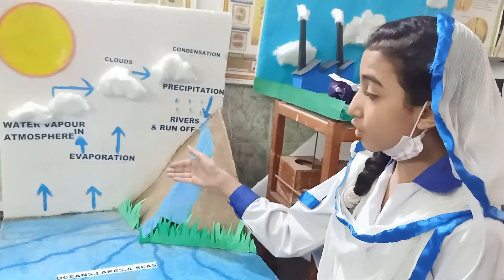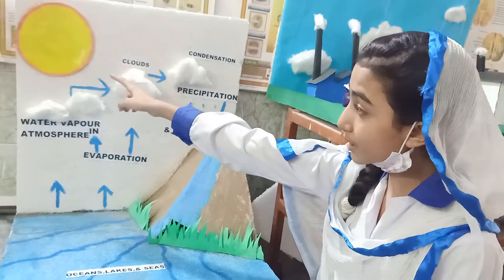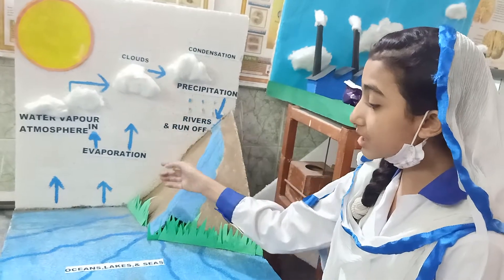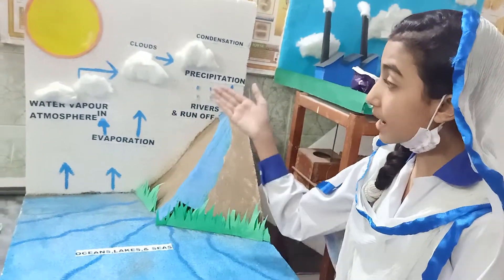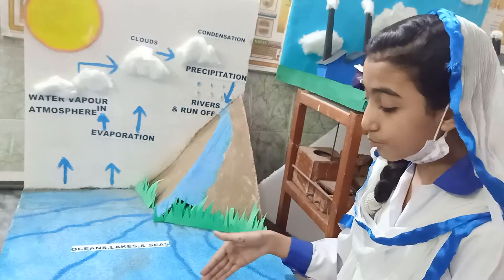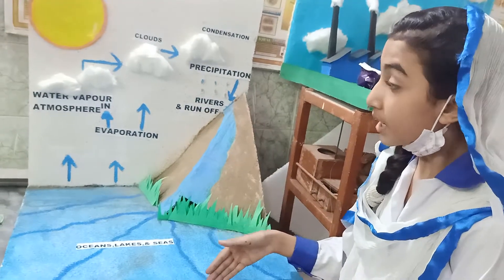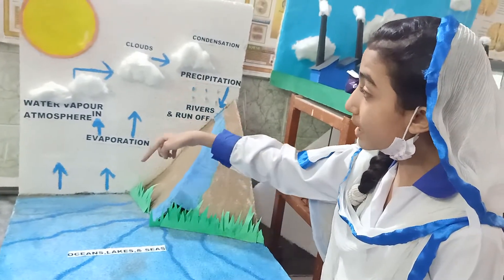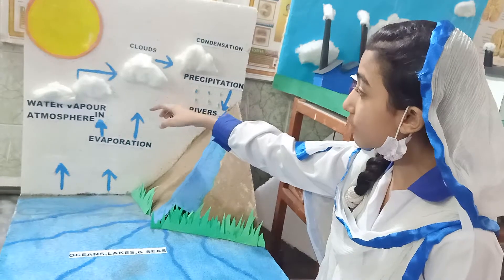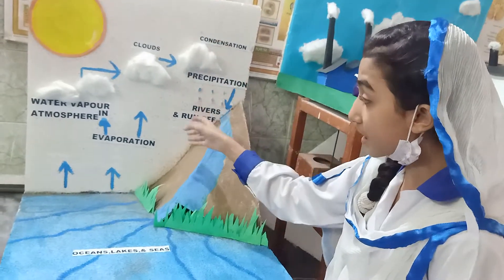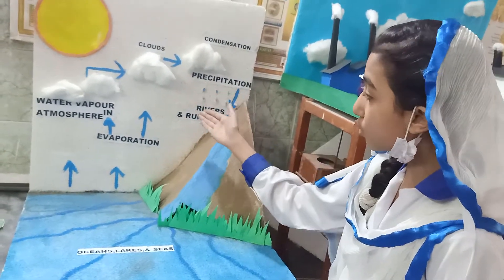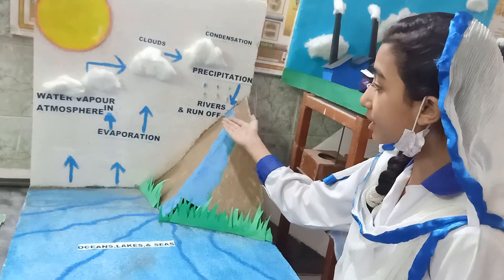During the water cycle, the sun causes water to evaporate from oceans, seas, and lakes. Water vapors rise into the atmosphere and form clouds. Cold air causes condensation, and then snow, hail, and rain fall back to the earth.